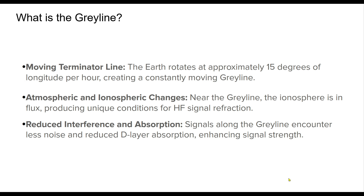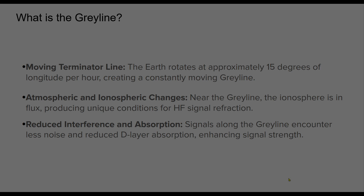The gray line is a transition zone of solar illumination that occurs as the Earth rotates — the transition from day to night or night to day. This dynamic terminator line creates favorable ionospheric conditions that enhance HF signal propagation. During gray line periods, signals often face less atmospheric interference and achieve stronger refraction through the ionosphere.